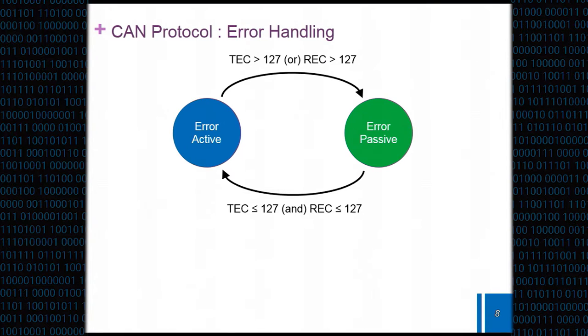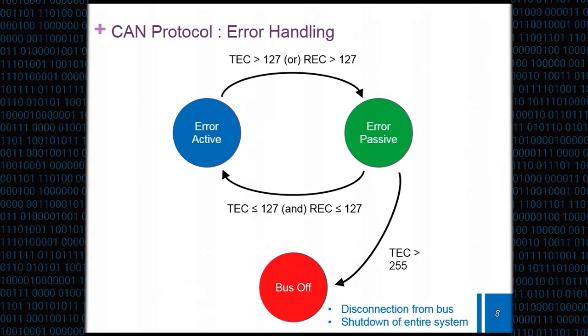However, if those ECUs keep on incurring problems on the in-vehicle network, incurring bit errors by themselves, if their TEC exceeds 255, the ECU gets disconnected from the bus. Or even, some vehicle manufacturers design their ECUs so that whenever even one ECU enters this bus off state, the whole vehicle is just shut down. They can recover back to their default state, either automatically or manually. But this really depends on how the vehicle manufacturers design their software.